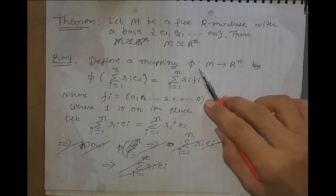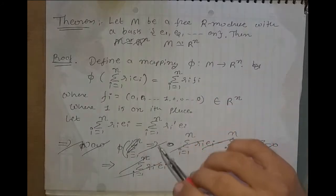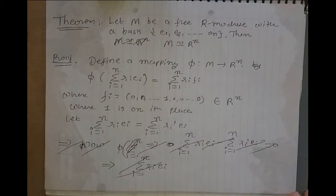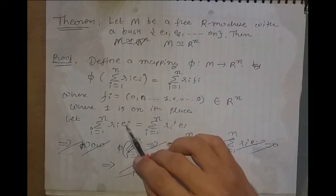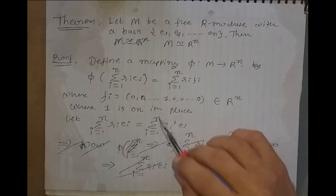First, we show that this map is well-defined. For that, we consider two elements that are equal and then show that their images are also equal. Consider two elements: Σ Ri·Ei and Σ Ri'·Ei, both with i running from 1 to n, and suppose they are equal.